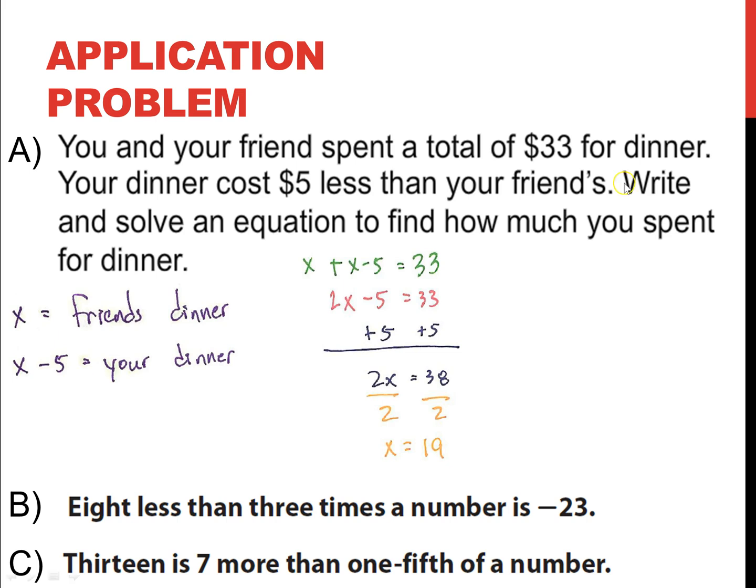Now, a lot of people stop there. But, the question asks, how much did you spend for your dinner? So x, remember, is your friend's dinner. So, x - 5, or 19 - 5, is your dinner, and your dinner costs you $14. So, that's how we would solve that.